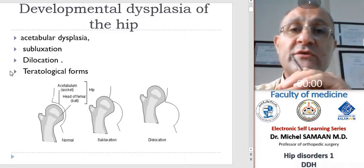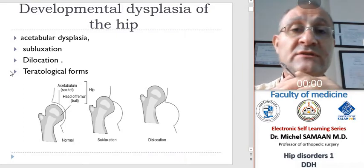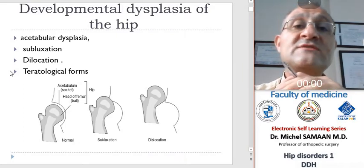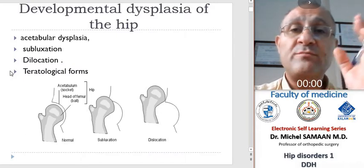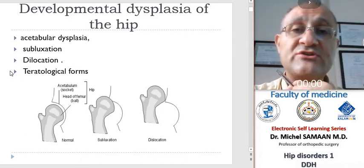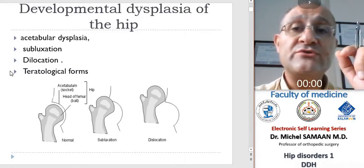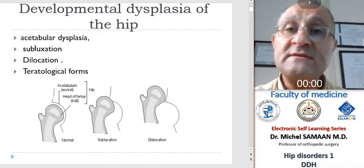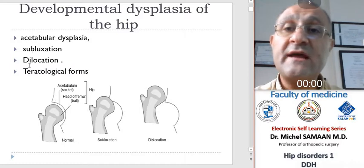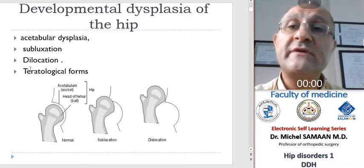The term congenital dislocation of the hip, which has been used anciently, has been largely superseded by developmental hip dysplasia, or developmental dysplasia of the hip — DDH — in an attempt to describe the range and evolution of abnormalities that occur in this condition, such as acetabular dysplasia without displacement, subluxation and dislocation, and teratological forms of malarticulation leading to dislocation.